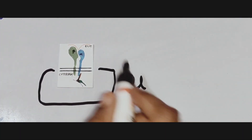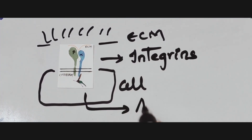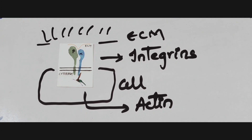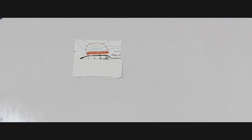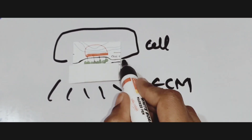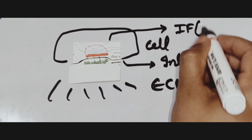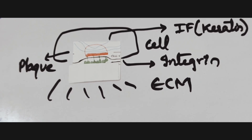Moving to cell-matrix junctions — imagine a cell attached to the extracellular matrix. Here the external proteins are integrins, and internally these integrins are connected to actin filaments for stabilization. This arrangement is called focal adhesion. The second type is hemidesmosomes, which are structurally similar to desmosomes — they have plaques and are internally connected to intermediate filaments — but the key difference is that their external proteins are integrins rather than cadherins.